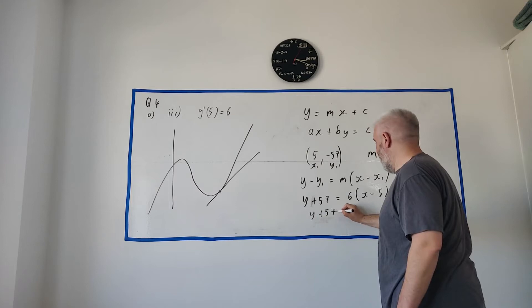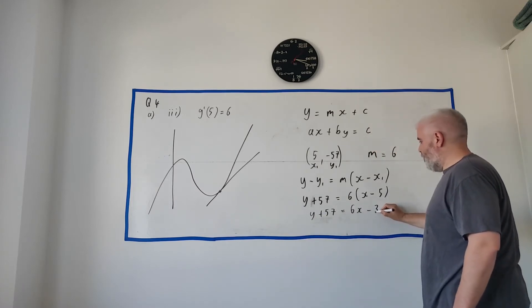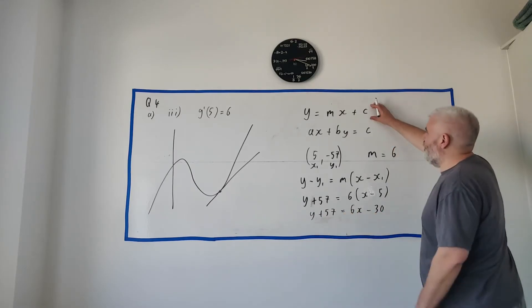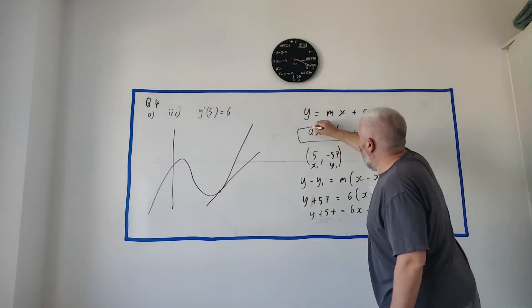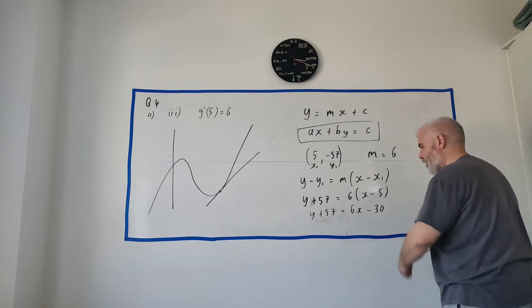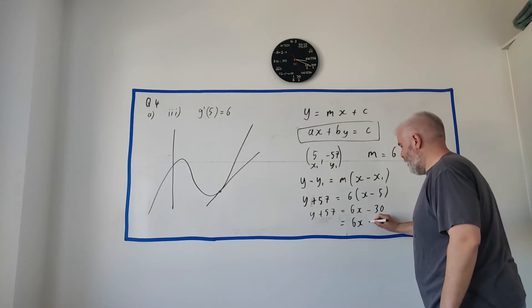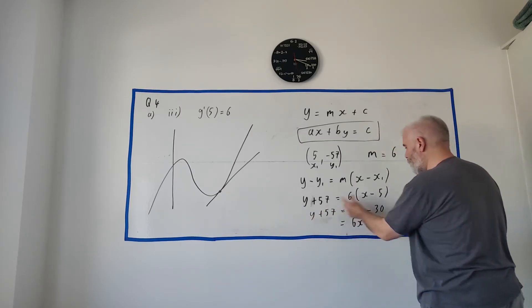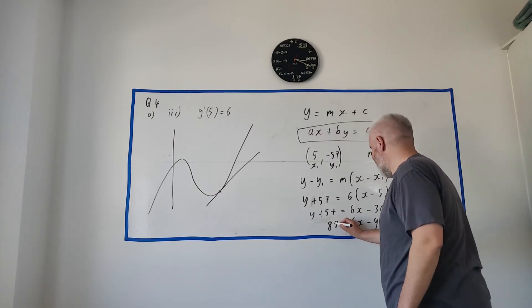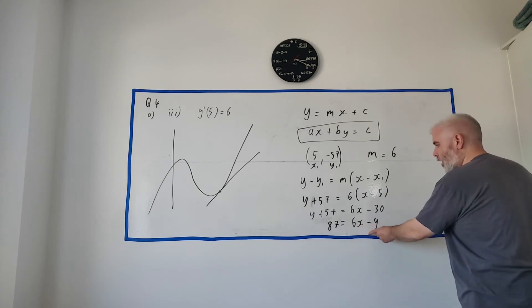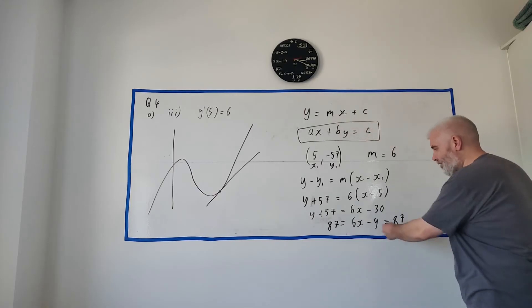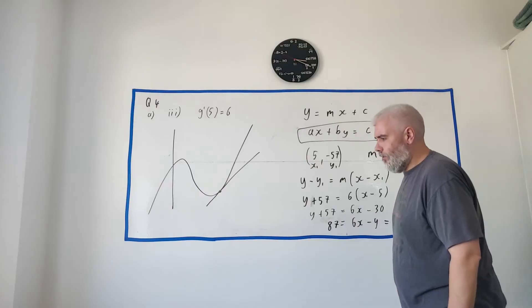We have y plus 57 equals 6x minus 30. Let's get all the x's and y's on one side. They want it to look like this one here. Get all the x's and y's on the same side. I like to keep x as positive. So let's get everything over this side. We'll have 6x minus y. Take y from both sides. Add 30 to both sides. And we'll get 87. So 6x minus y is equal to 87. They ask you to put the equals on the right. Same thing though. Okay. So that's the answer to part A.